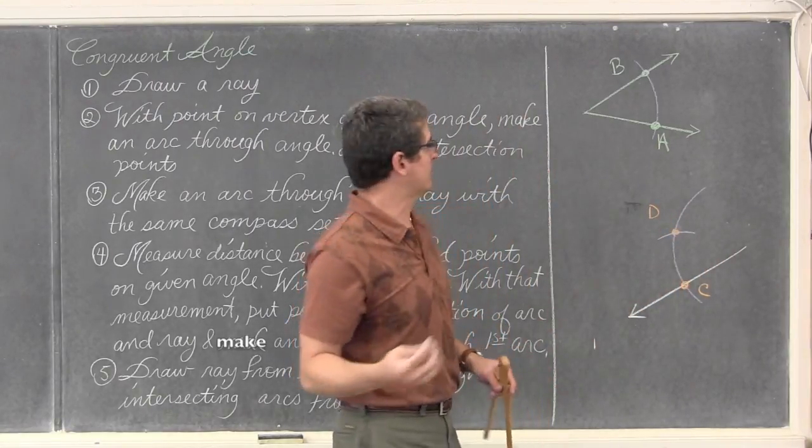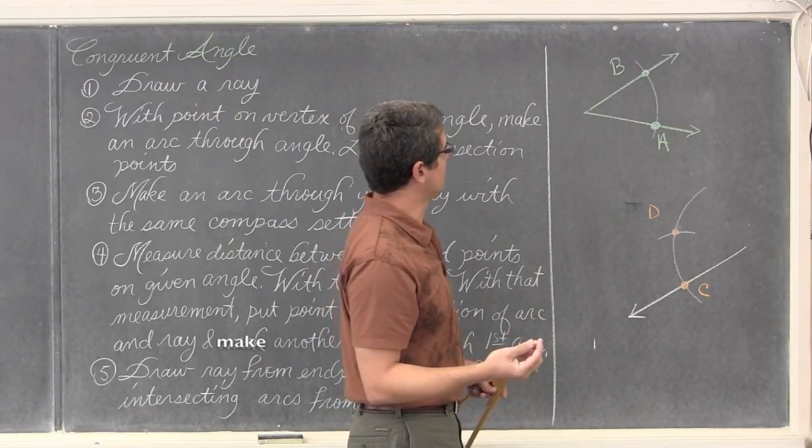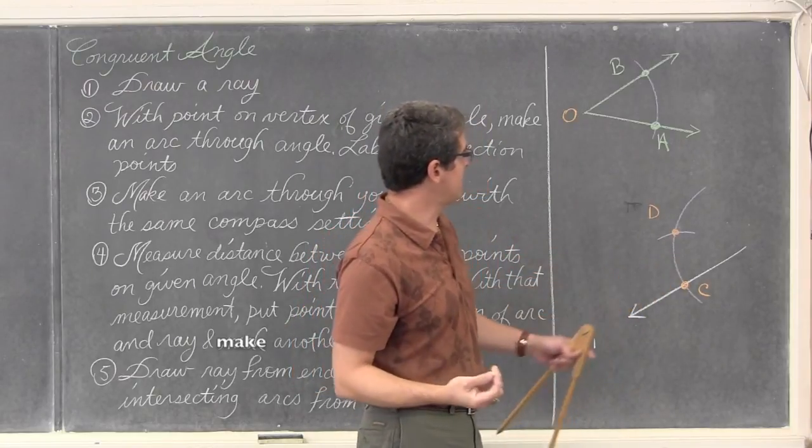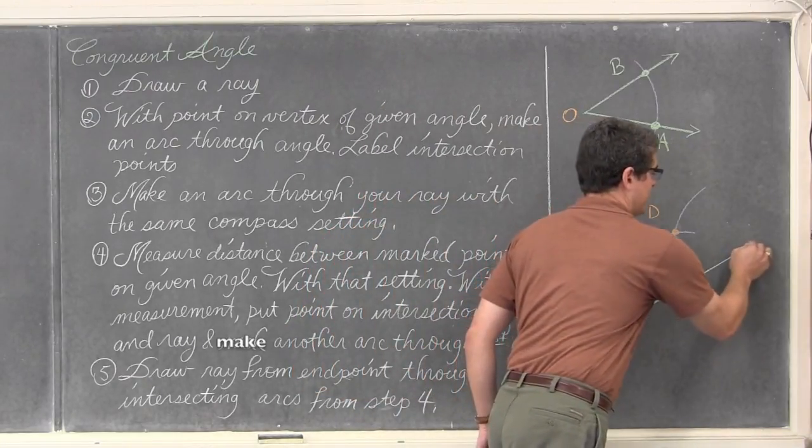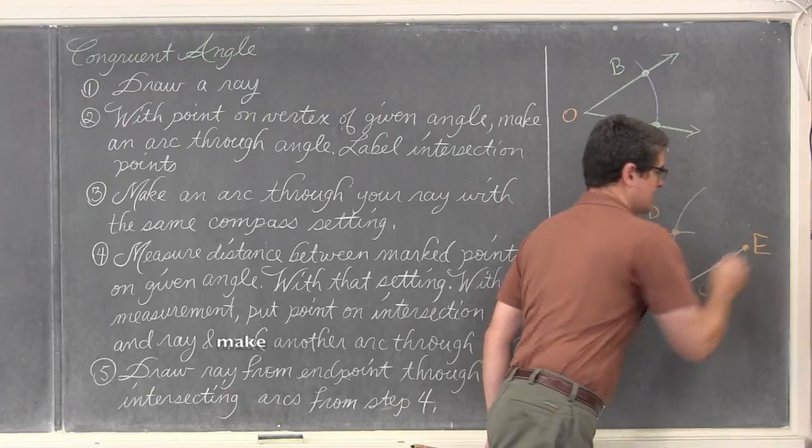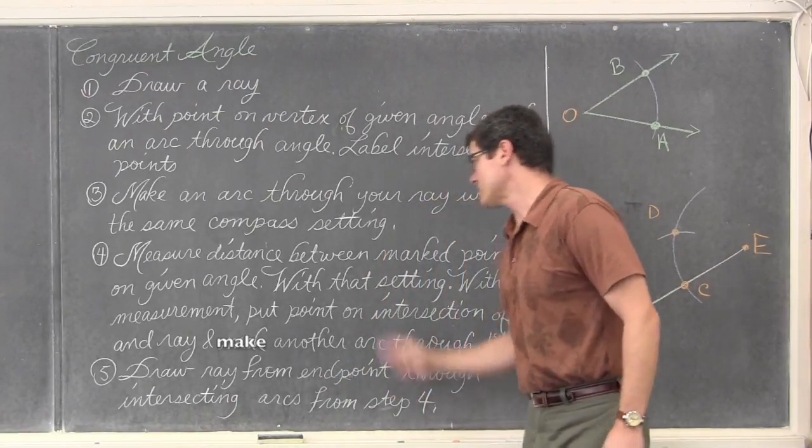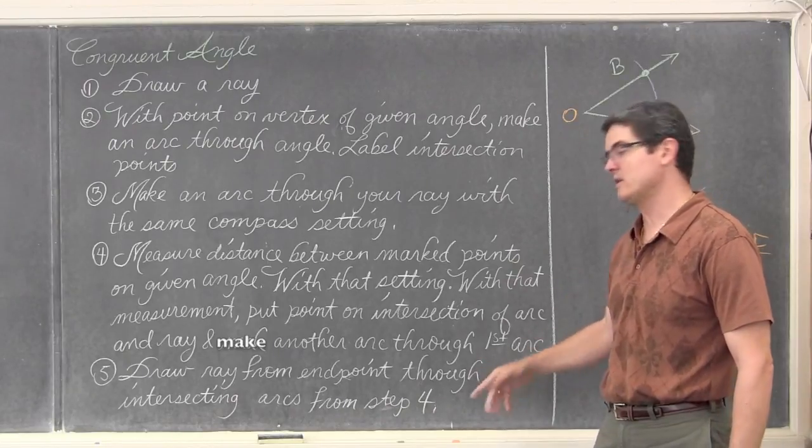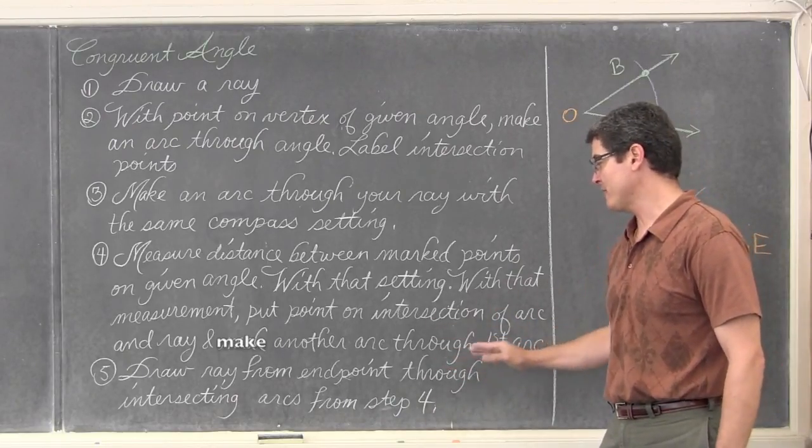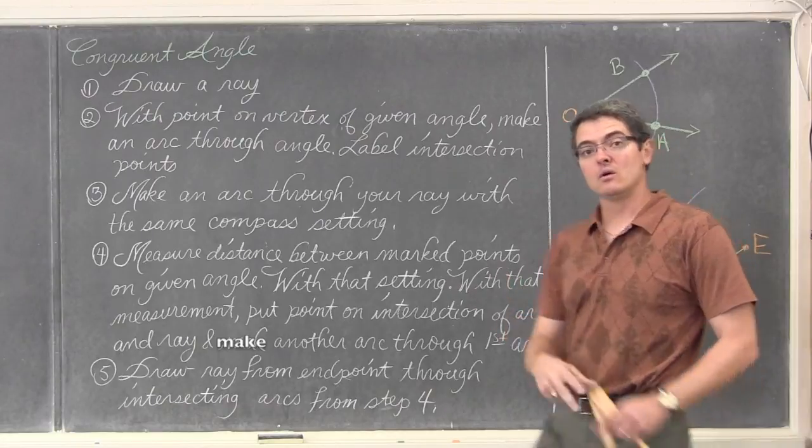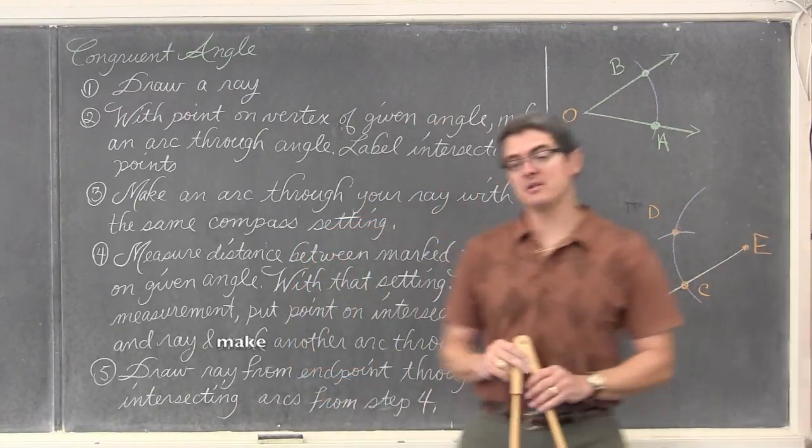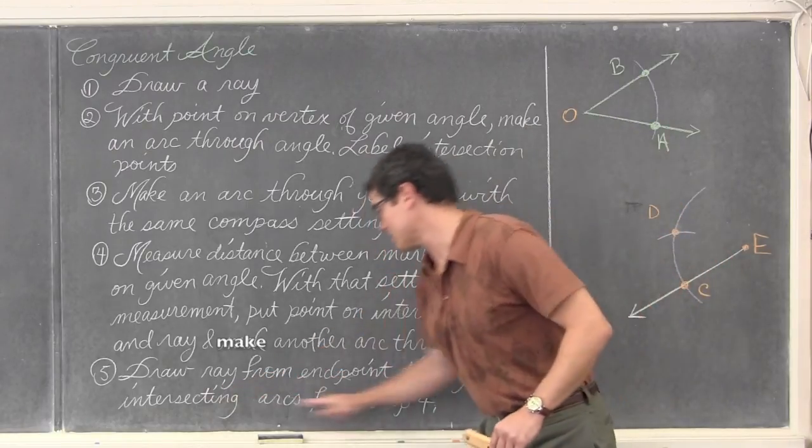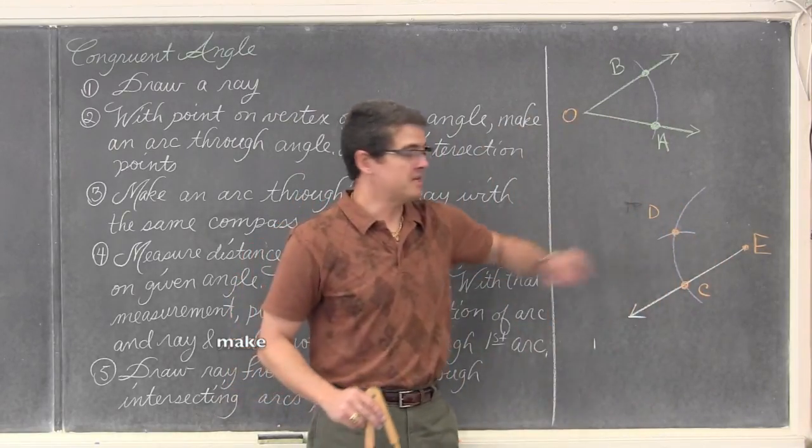Now that I am trying to label everything, this is point O. I have D and C. How about we call this first end point E. So measure the distance, we did that. Setting, did that. Make an arc. Now we are done. We are going to draw a ray from the end point of the ray where we are trying to copy the angle through the intersecting arcs which we now have labeled as D. That is going to be it.